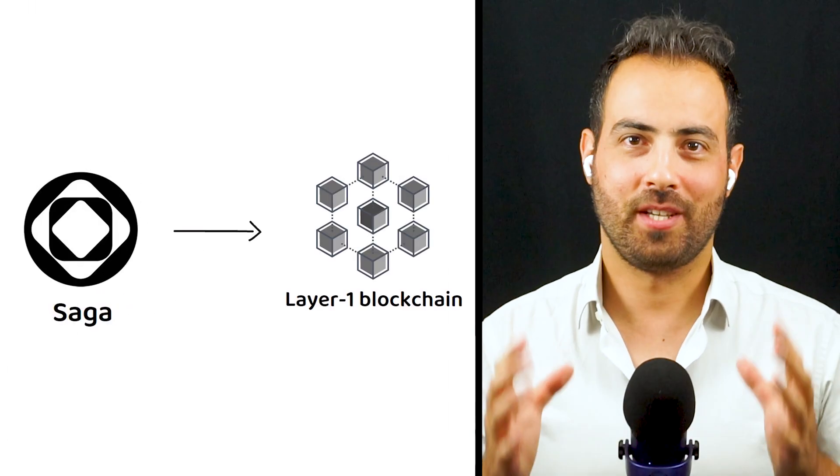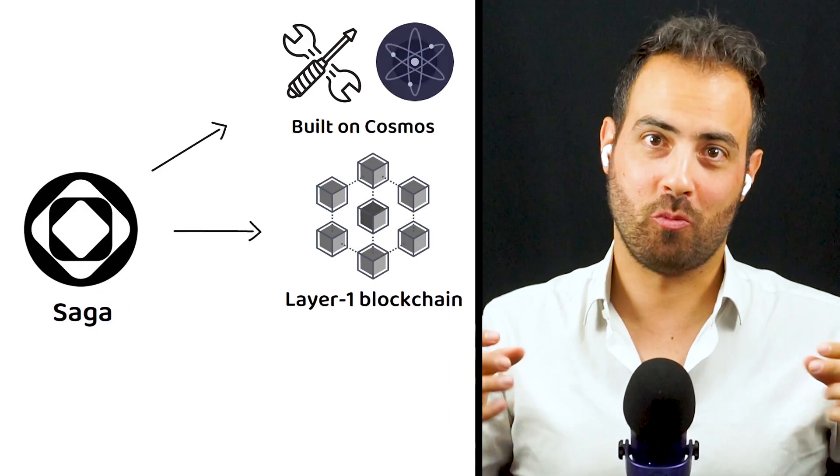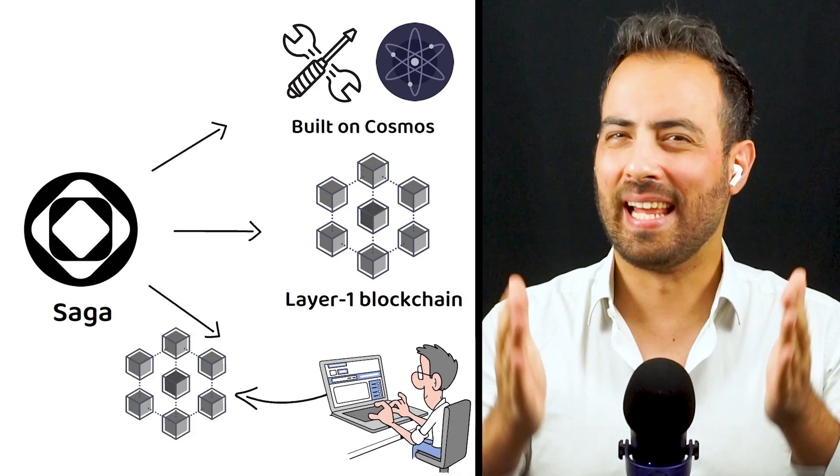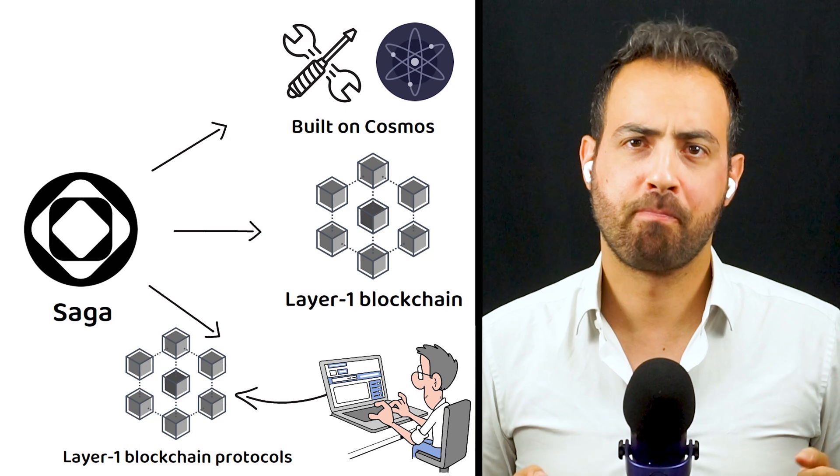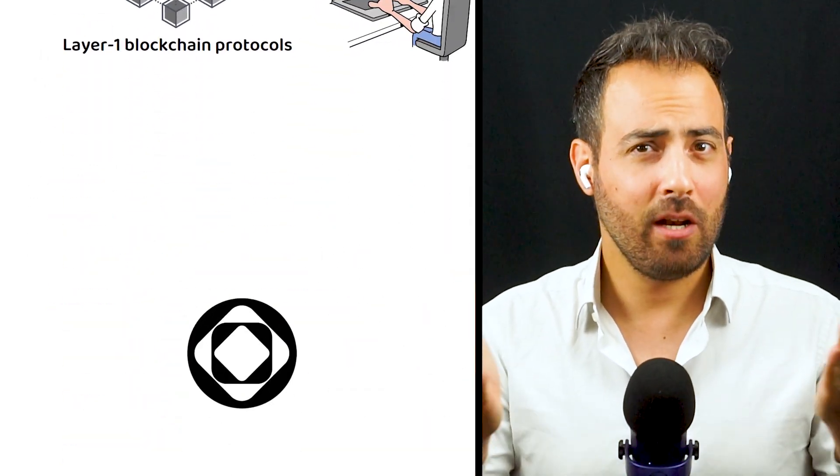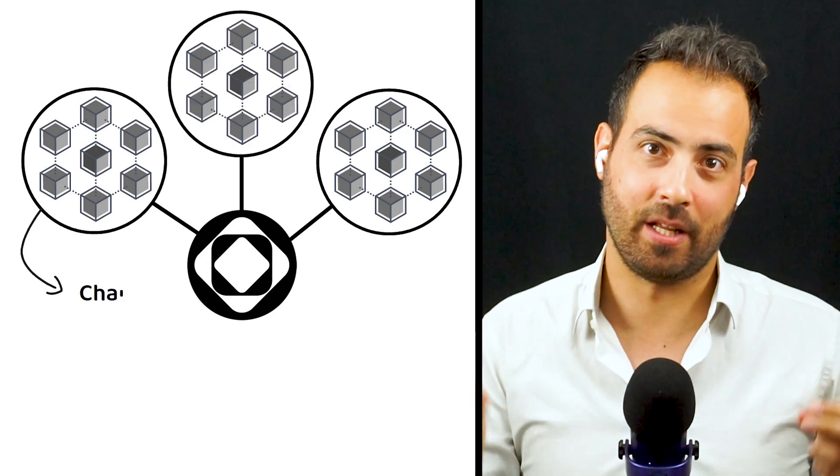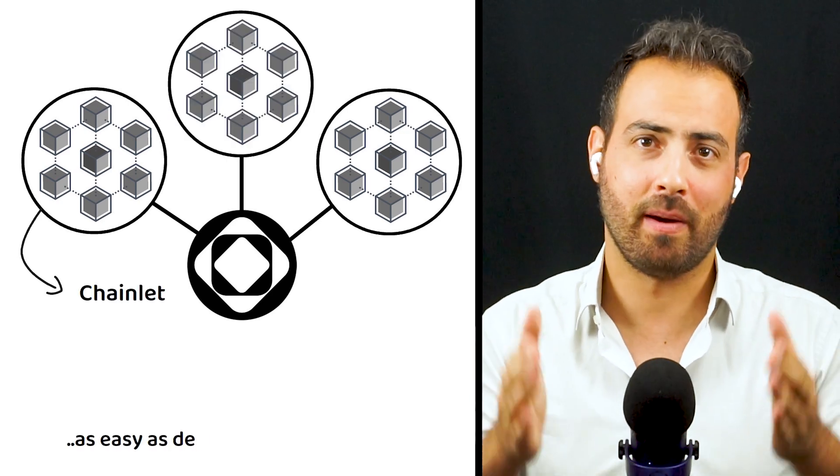Saga is a layer one blockchain protocol built on the Cosmos network that is designed to help developers launch layer one blockchain protocols. At its core, Saga looks to make launching a dedicated blockchain, known as a chainlet on the Saga network, as easy as deploying a smart contract.